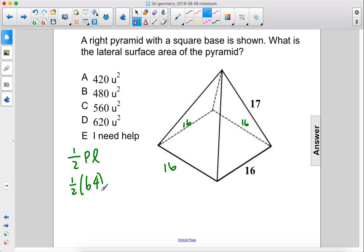So 1 half times 64 times the slant height L, which we need to figure out. So we have our L here, and this length here is 8 since it's half of 16, and we know the hypotenuse of this right triangle is 17.